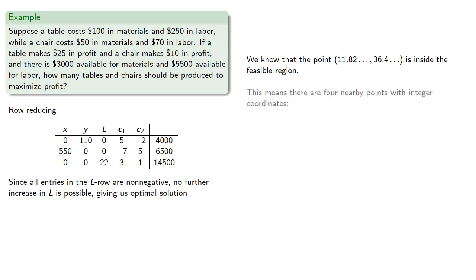This means there are four nearby points with integer coordinates. While at least one must be outside the feasible region, this means that as many as three of these points could be inside.